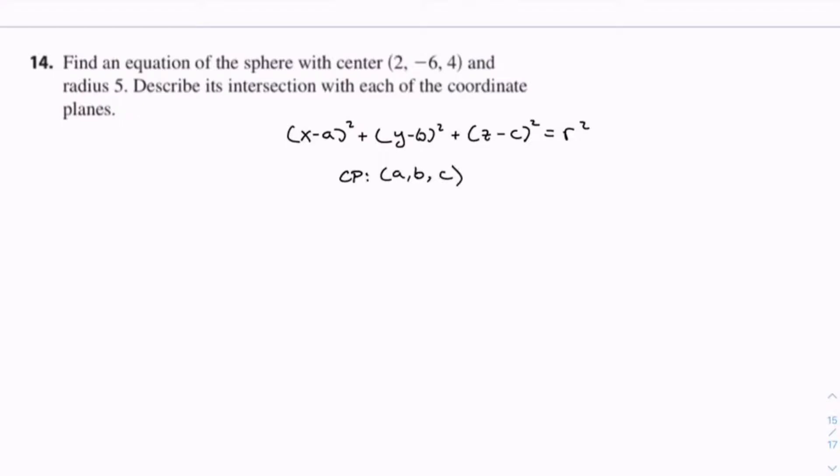So given this, we have our point (2, -6, 4). A equals 2, B equals -6, C equals 4. And we have our radius r, which equals 5.